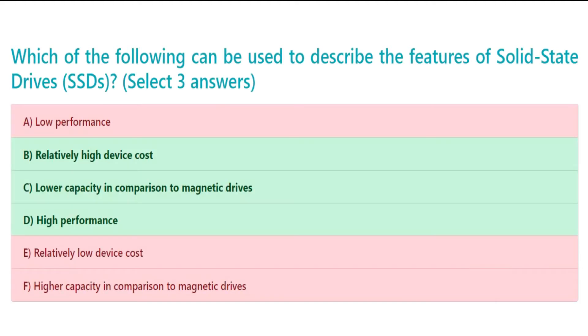The correct answers are B. Relatively high device cost, C. Lower capacity in comparison to magnetic drives, and D. High performance.